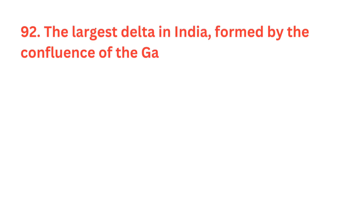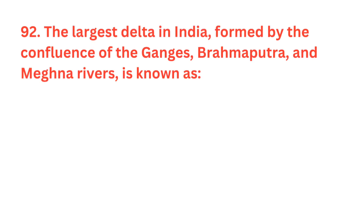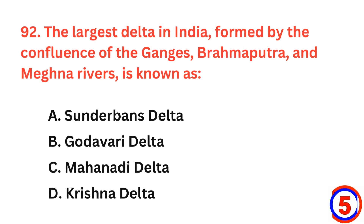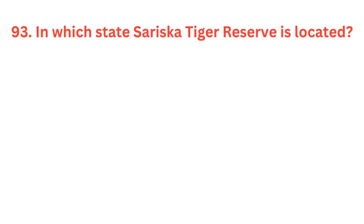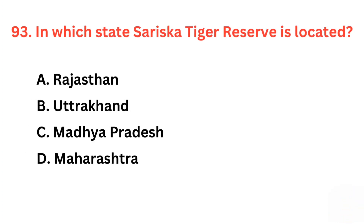The largest delta in India, formed by the confluence of the Ganga, Brahmaputra and Meghna rivers, is known as? The correct answer is option A, Sundarbans Delta. In which state is Sariska Tiger Reserve located? The right answer is option A, Rajasthan.